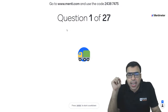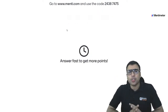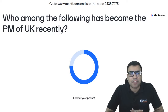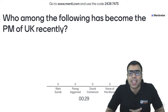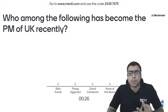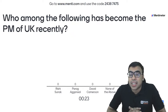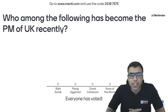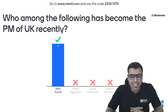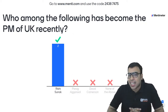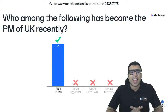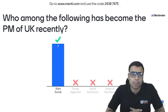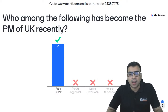Let's start the quiz. You can also answer in the live chat. The first question is: who among the following has become the PM of UK recently? Options: Rishi Sunak, Parag Agarwal, David Cameron, none of the above. He became very famous, and that is why you should know it. The right answer is Rishi Sunak — he is of Indian origin, and that is why he became very famous in India. He is the Prime Minister of UK, so A is the right answer.